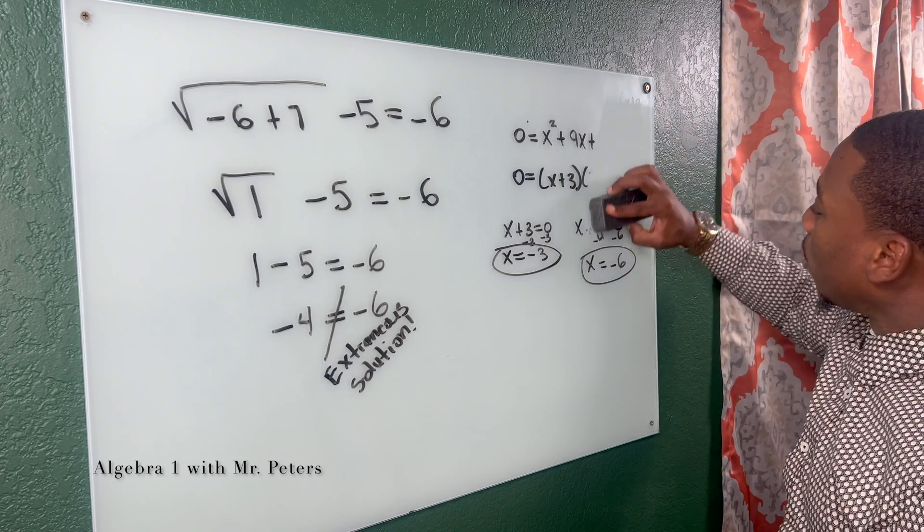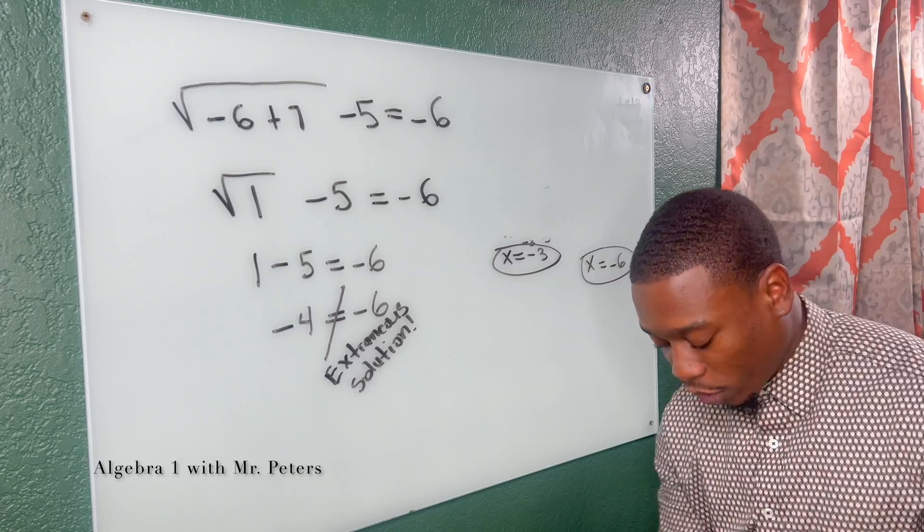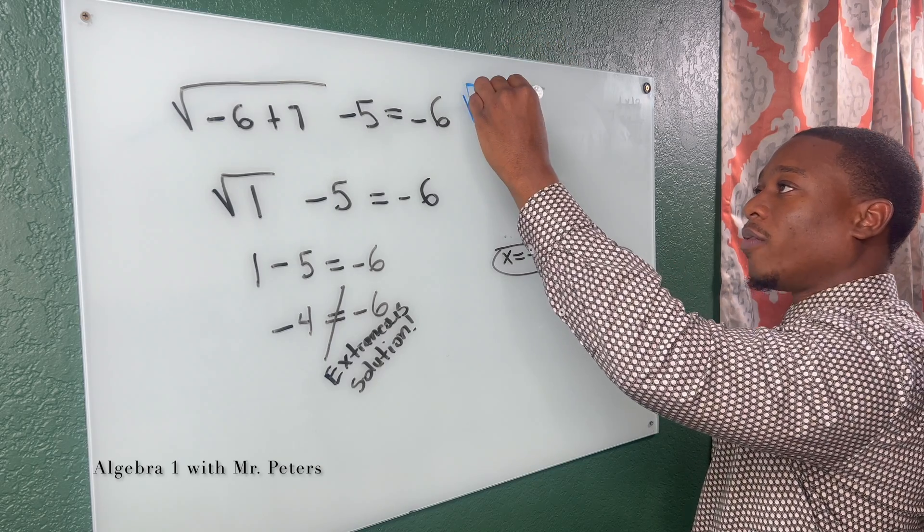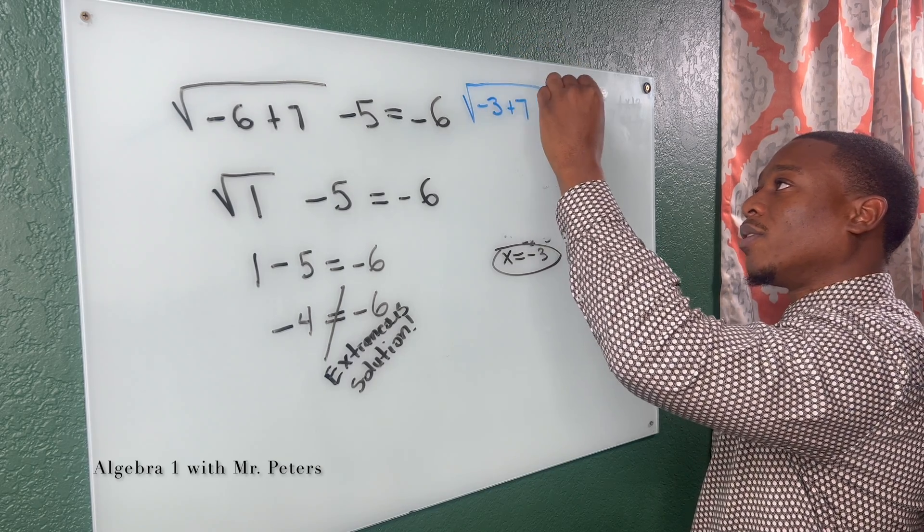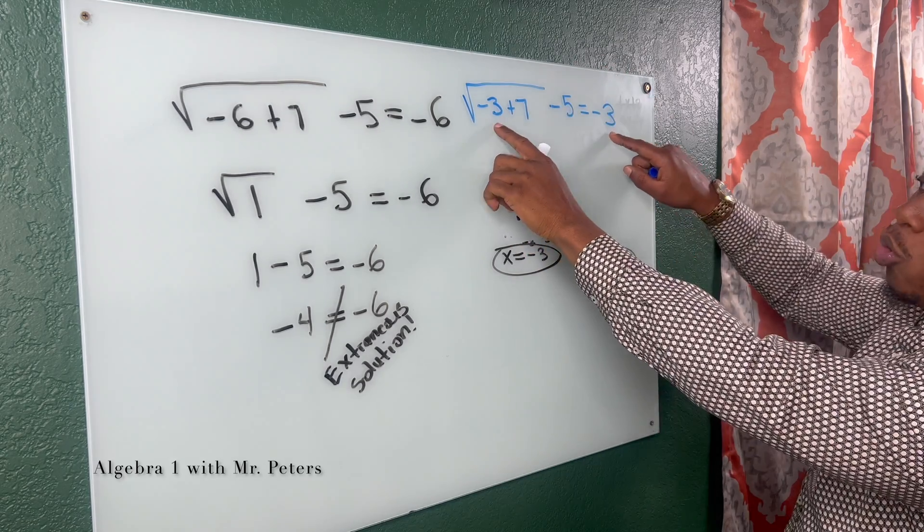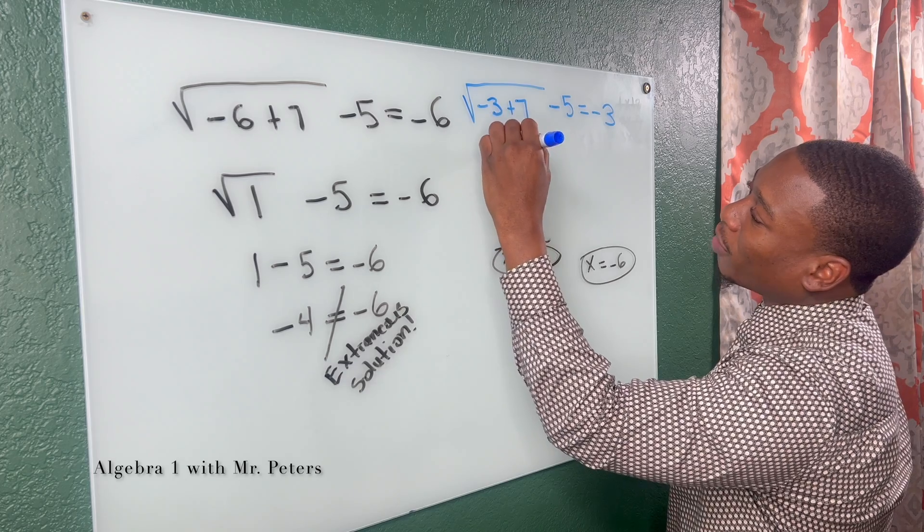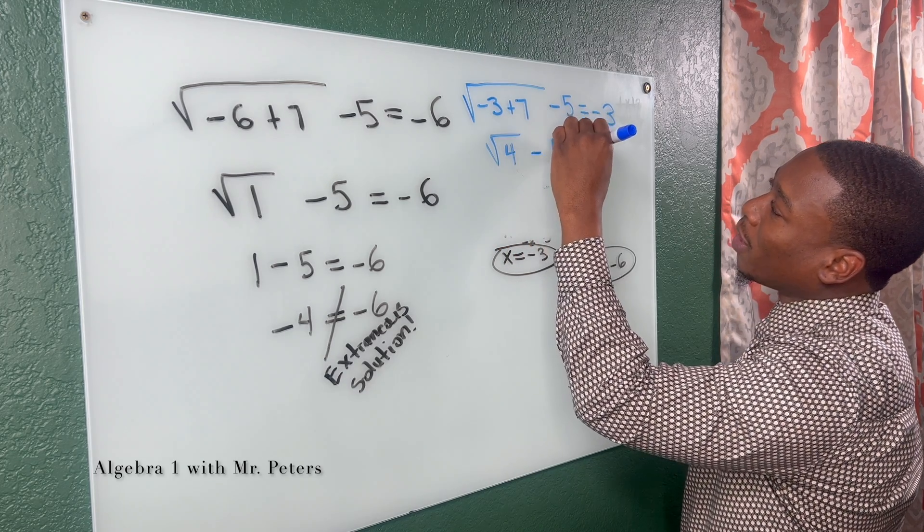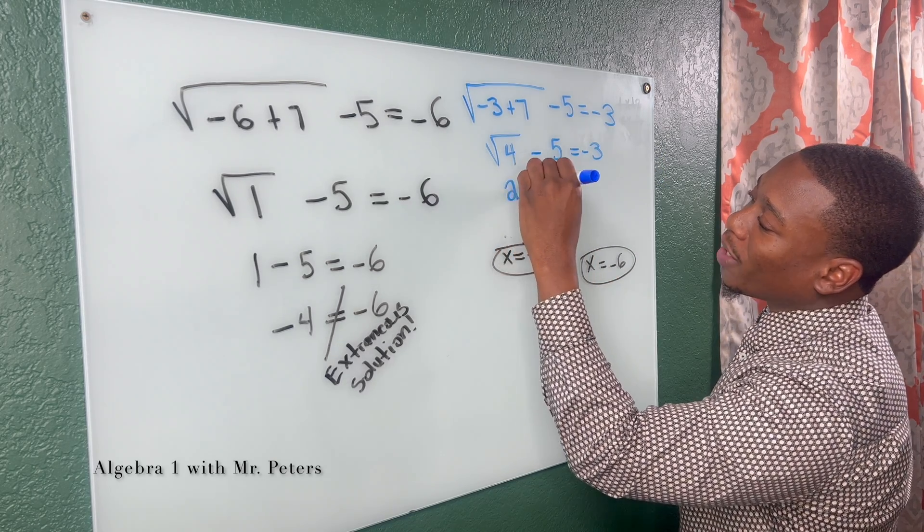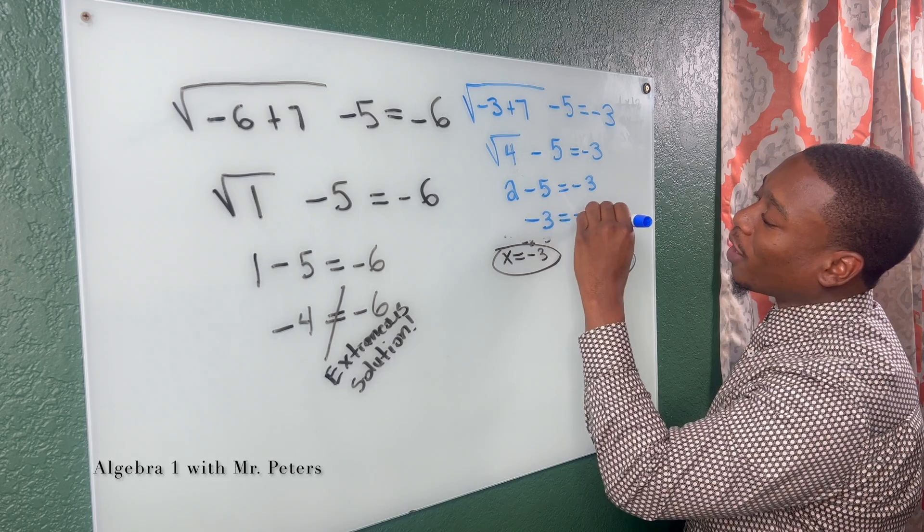Now what I'm going to do real quick is let's see if three is also an extraneous solution. And we'll switch colors. So this could stick out some more. So we write the equation. We have negative three plus seven minus five is equal to negative three. Remember these two were X's. So we just plugged in negative three for them. So what happens now we combine, we have radical four minus five is equal to negative three. Once we simplify radical four, it's going to turn into two minus five, which equals to negative three. So we say negative three is equal to negative three.